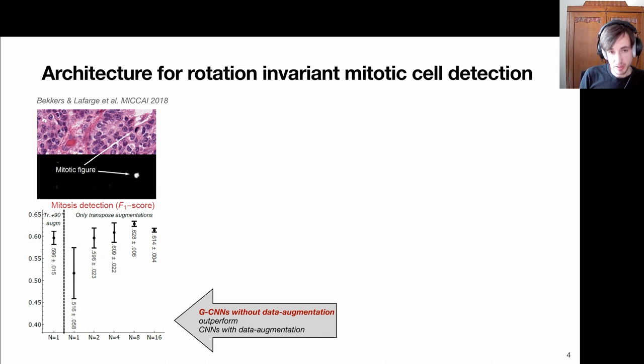Then we use the same architecture but now sample, for example, two rotations, 180 degree rotations, and four rotations and eight. This is the discretization of the group. We match the kernel under eight different rotations and build group convolutions with it. Another important remark: all these networks use the same number of parameters.